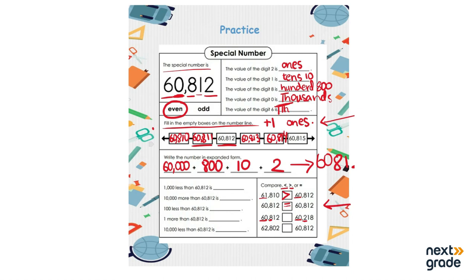The next example: 62,802 versus 60,812. Looking at the ten-thousands place, 60,000 is the smaller one and 62,000 is bigger, so 62,802 is greater. For the remaining left-side examples, I want you to practice those at home and we will discuss the answers in the next video.